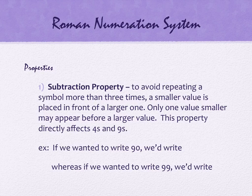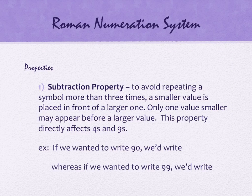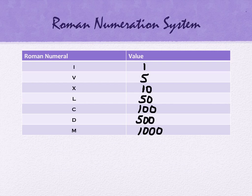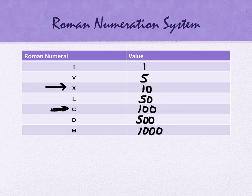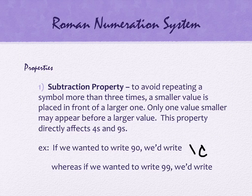So if we wanted to write the number 90, what is the closest numeral to 90 on the table? C — that's 100. We use the subtraction property because 90 has a nine in it. The only thing that can come before a C is an X. You can do XC, but you can't do IC. It's got to be one value less, and the fives don't count. So because X is in front of C — X is worth 10, C is worth 100 — when the number comes before, it is subtraction.